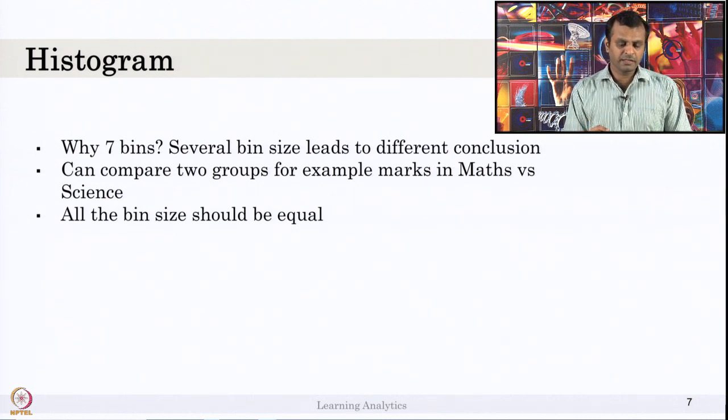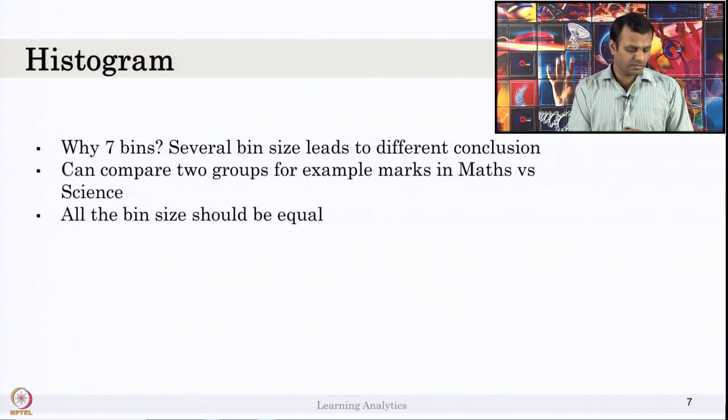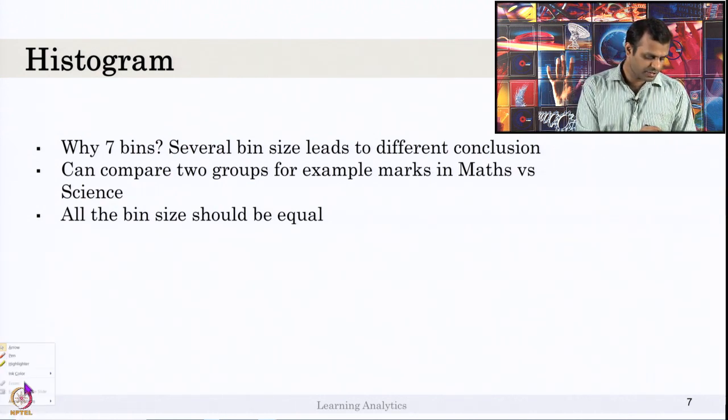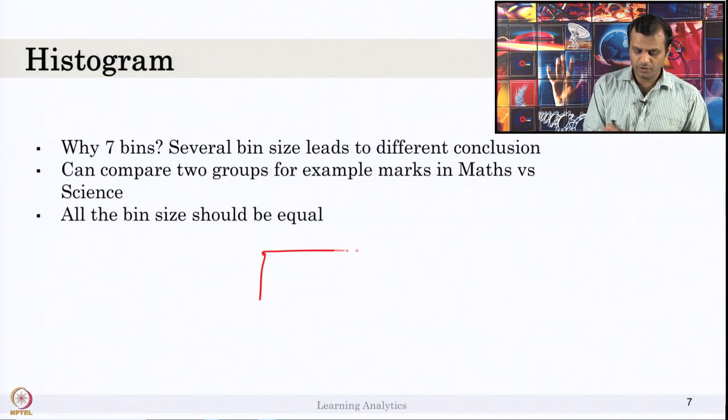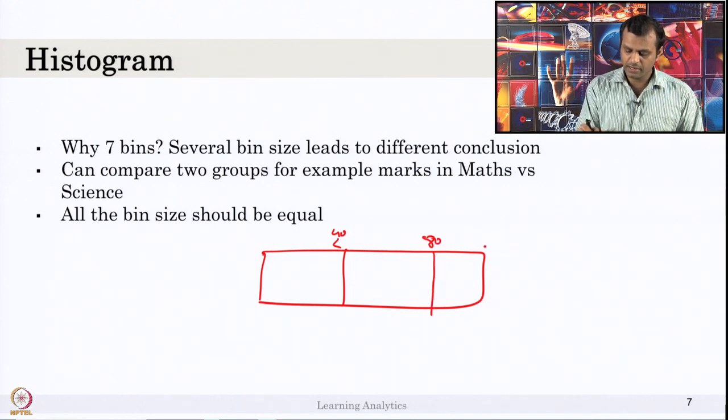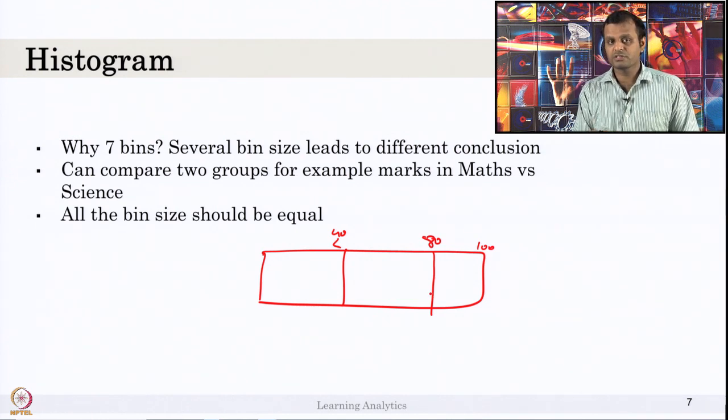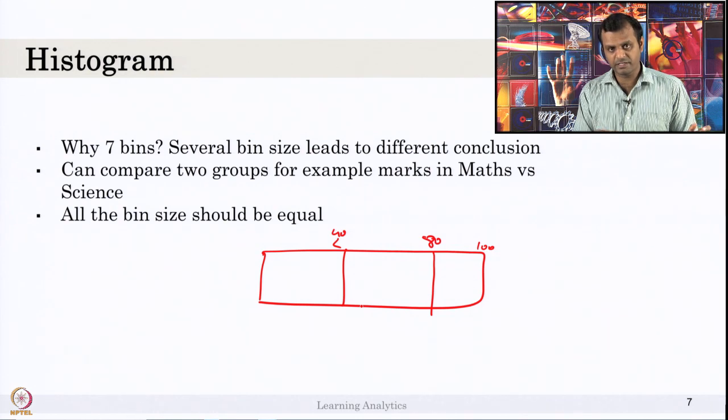You have to be careful in using these bin sizes and why you pick this kind of bins should be supported and argued correctly. Histogram can compare two groups, for example marks in math versus science. The important point is all the bin sizes should be equal. You should not have a bin, for example, one bin of less than 40 marks, 40 to 80, and 80 to 100. The bin size is not equal, this is 40, this is 40, this is 20. This is not correct. Make sure all the bins should be equal. Also when you compare marks A to marks B, make sure the bin size is the same.